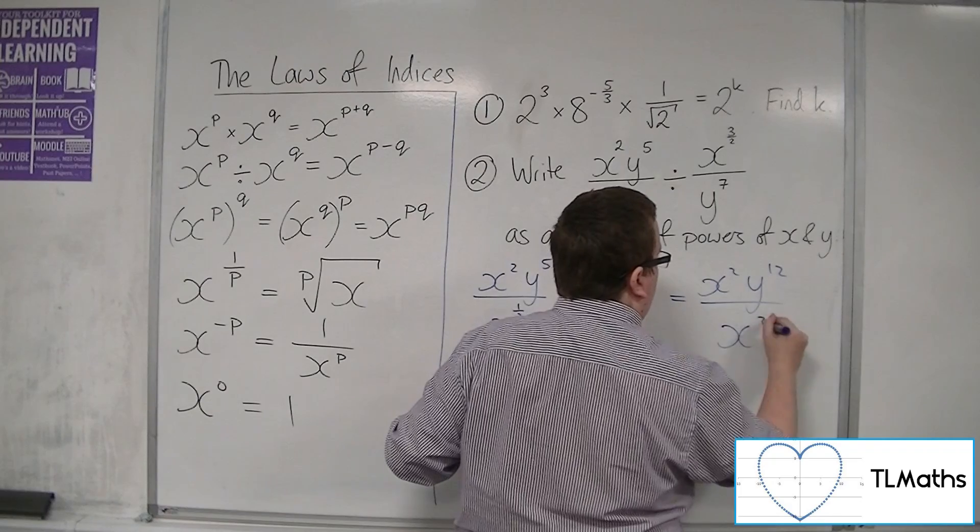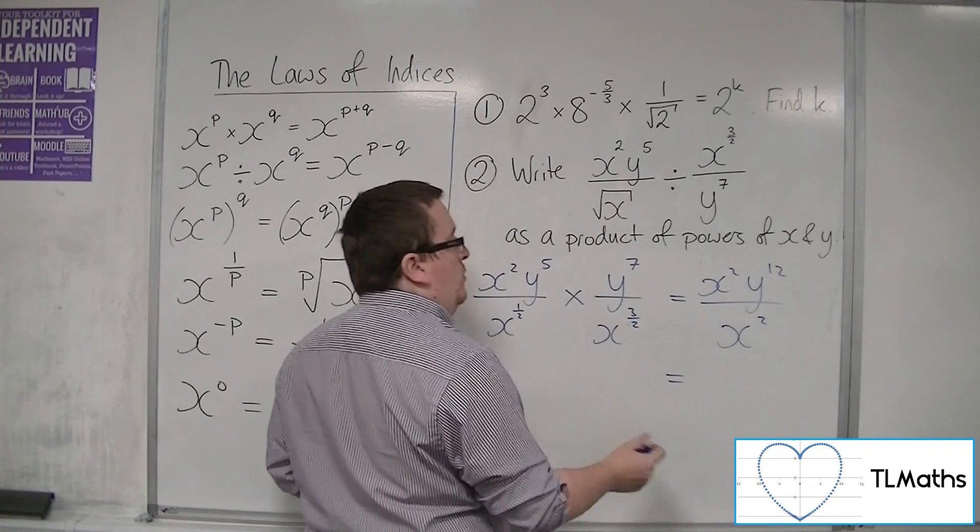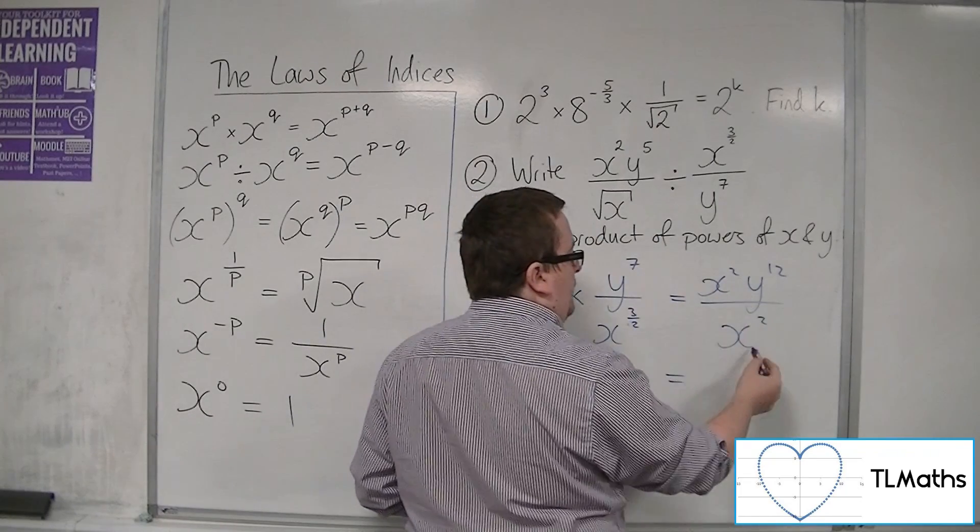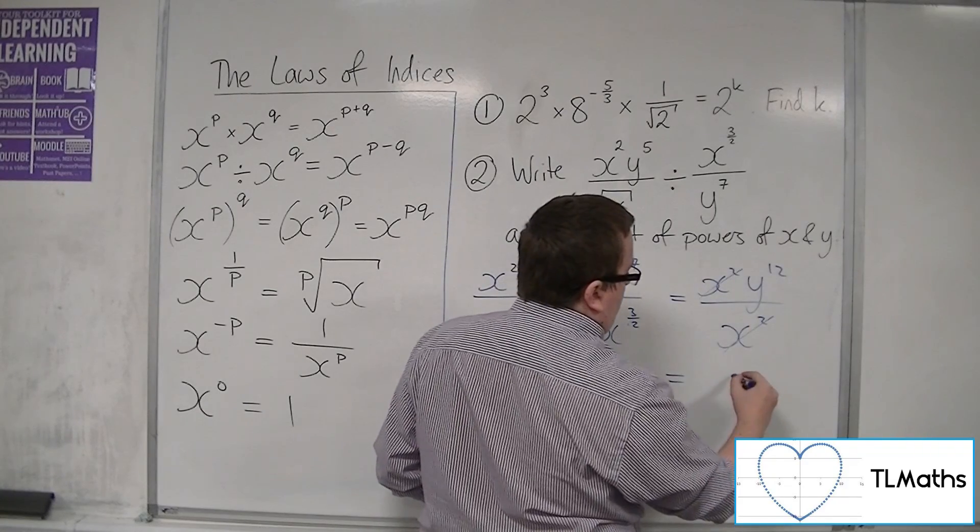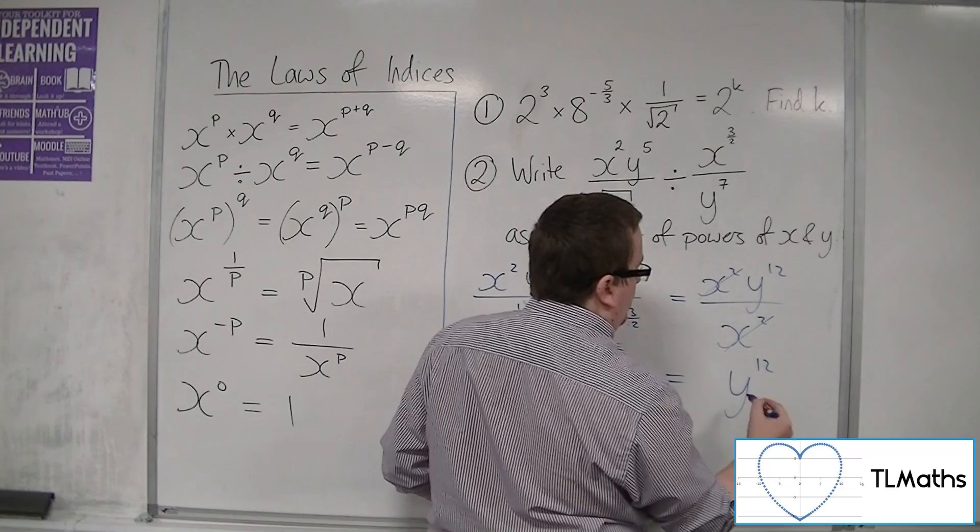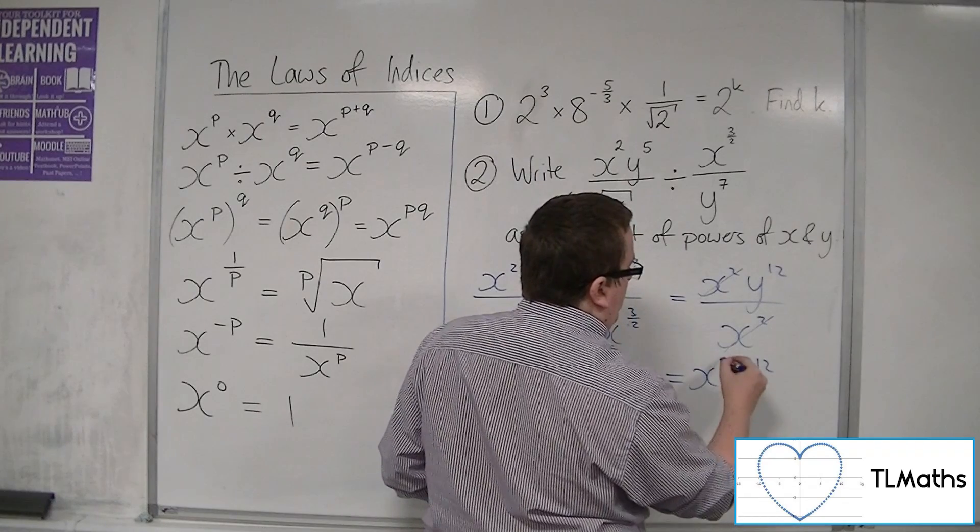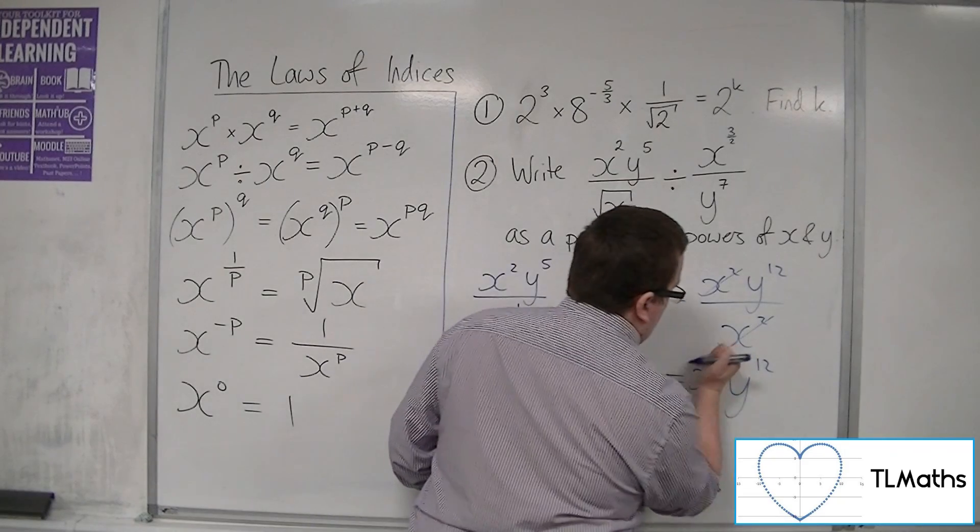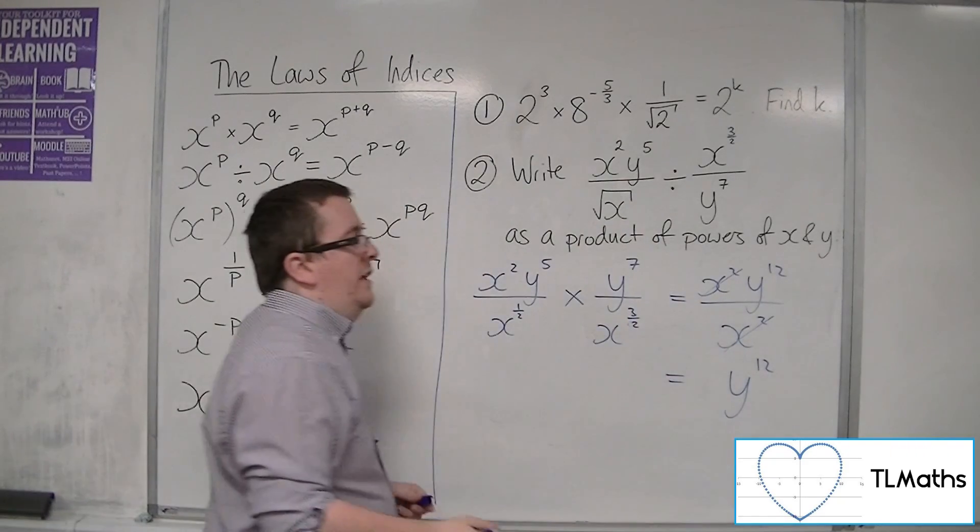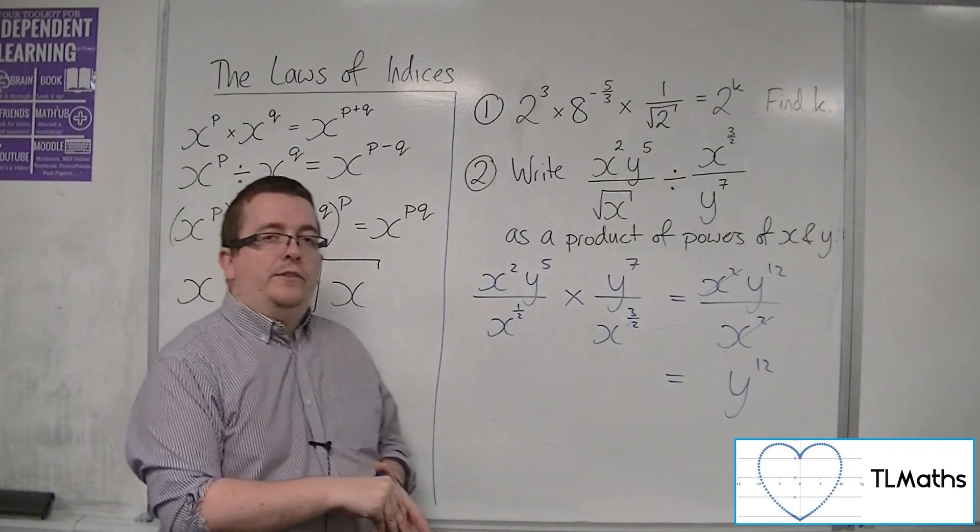So we've got x squared on top and x squared on the bottom. They can cancel, so we're just going to be left with y to the 12. You could write that as x to the 0, y to the 12, but really y to the 12 is perfectly fine as the answer.